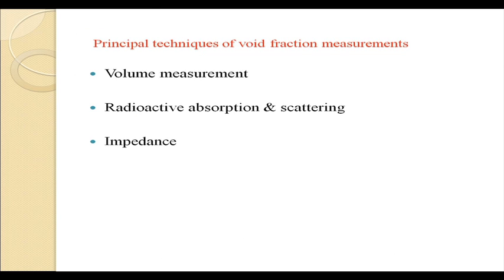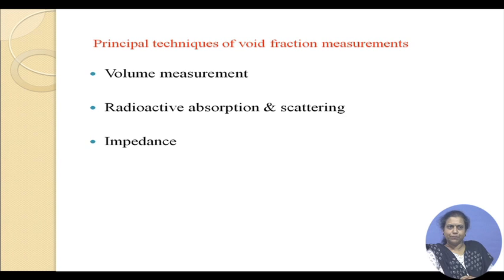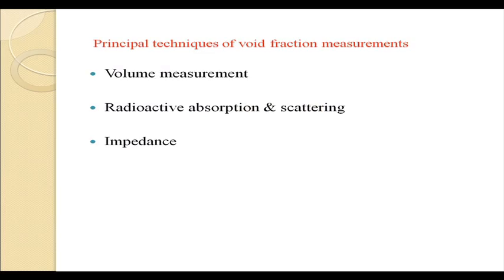I would also like to give a brief idea about void fraction measurements. Flow pattern estimation means measuring the distribution of the voids, but if we want to find any useful property of the two-phase mixture — say two-phase density or pressure drop — we would want not just the distribution of voids but also the average void fraction. The most common technique to measure void fraction in macro systems is typically the quick closing valve technique.